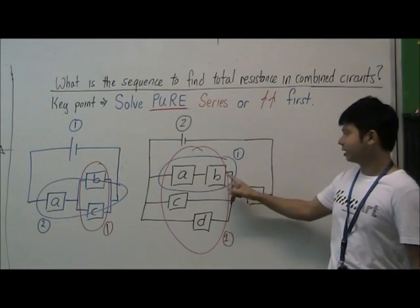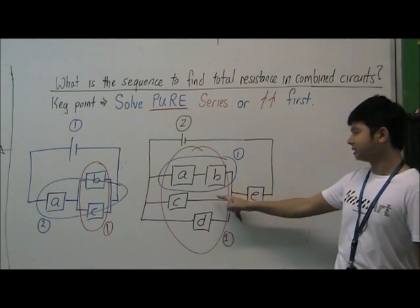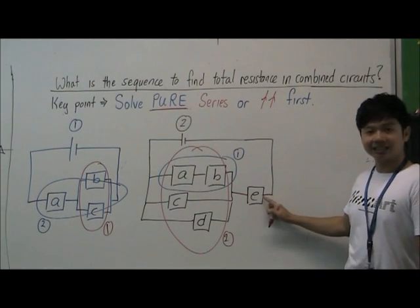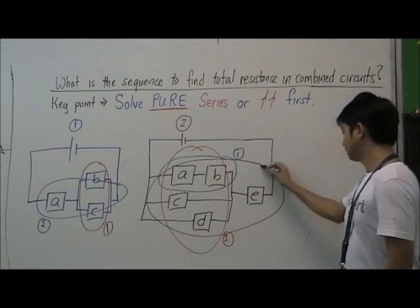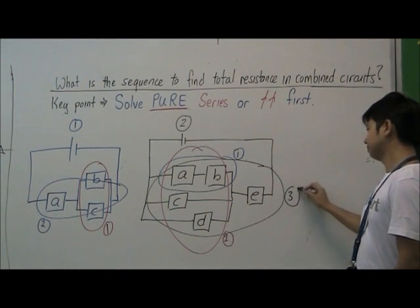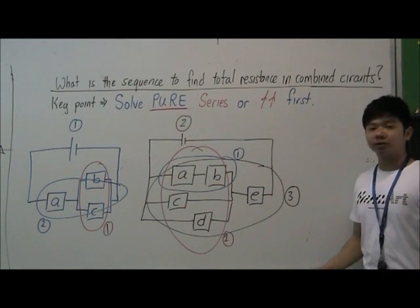Then after we get this right, this combined resistance here will be in series with resistor E, and this will give us our third step. So this is how we go about solving the total resistance with combined circuits.